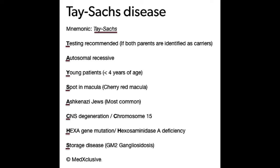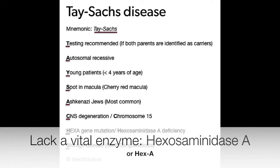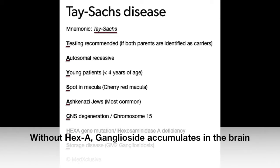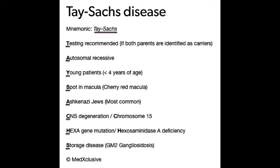Tay-Sachs Disease. Children with Tay-Sachs Disease lack a vital enzyme, hexosaminidase A — hex A. Hex A is needed for the body to break down a fatty waste substance found in brain cells. Without hex A, this substance accumulates abnormally and causes progressive damage until the nervous system can no longer sustain life.